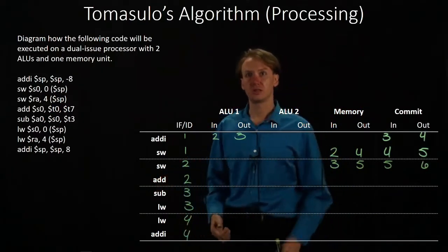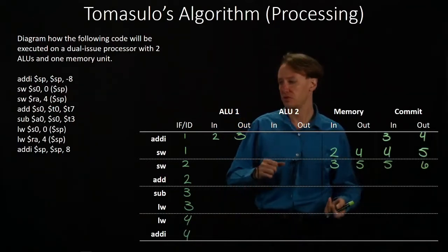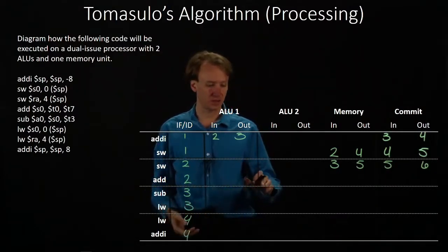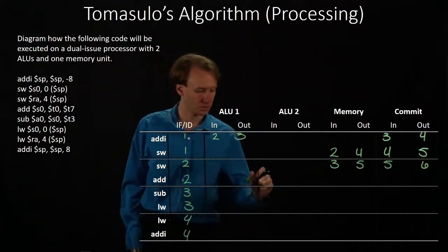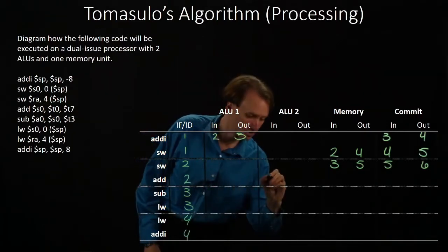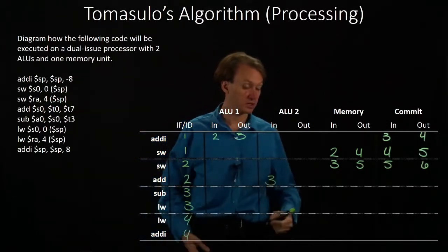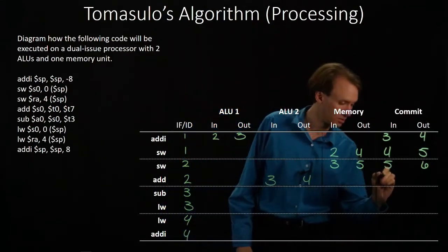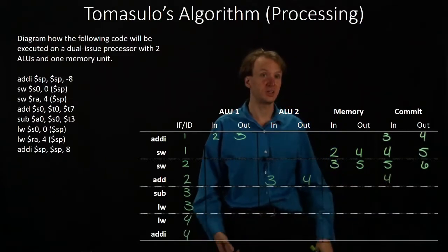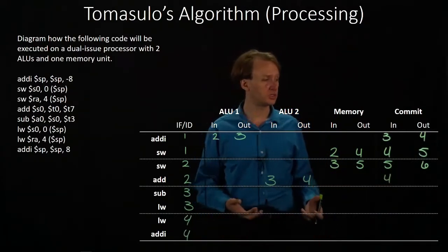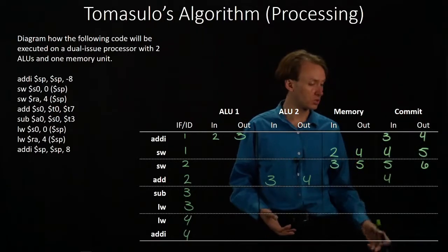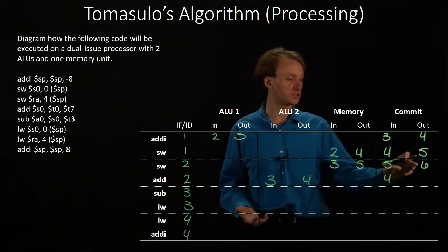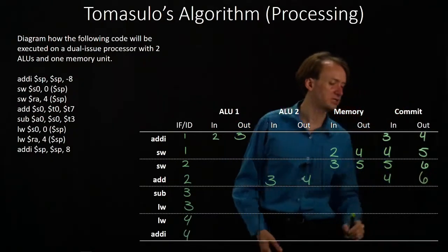The add instruction is dependent on T0 and T7. Neither of these are related to any of the instructions we've had before, so we'll send it to ALU2. It can run immediately because all of its parameters are available, so its results reach the commit unit in cycle four. However, we need to commit all instructions in order, so we can't commit this instruction in cycle five — we'll have to wait until cycle six, where we do still have one opening.